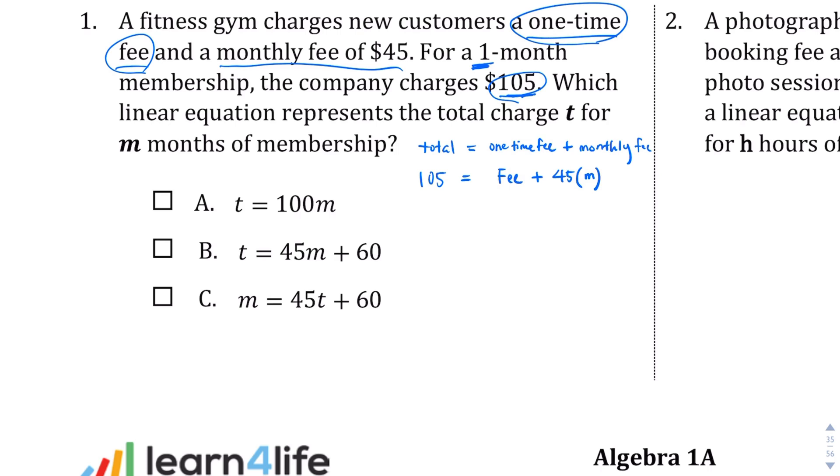Now, if we take a look at the choices, maybe we should look for something that has 45 times M in it, the number of months. And the only one that has that is choice B there. So I'm pretty sure that B is going to be the correct answer. But let's take a look at A and C just to make sense of why those are not true. If we look at choice A, it's 100 times M. That doesn't work because if we spend a month there, we will have paid $100. And this clearly tells us after one month, we pay $105. So that is not the correct choice.